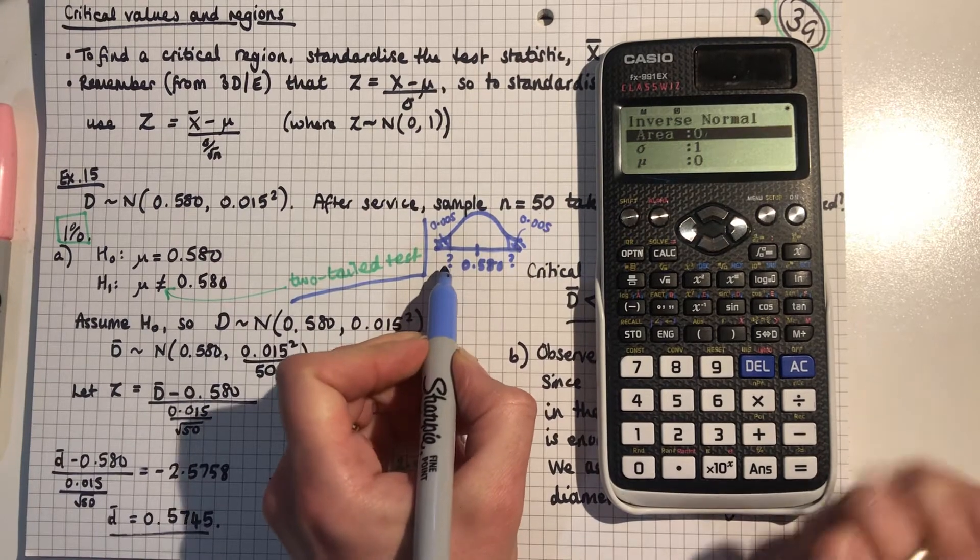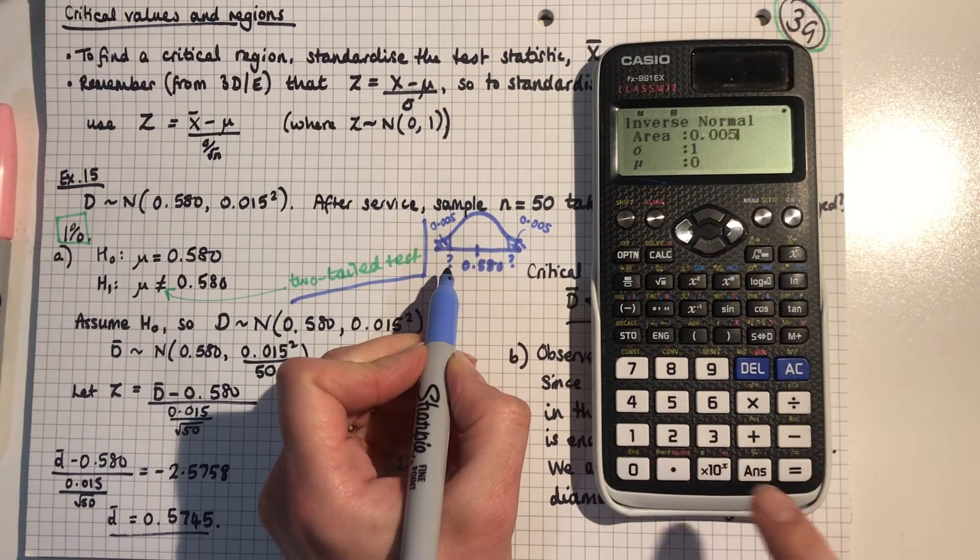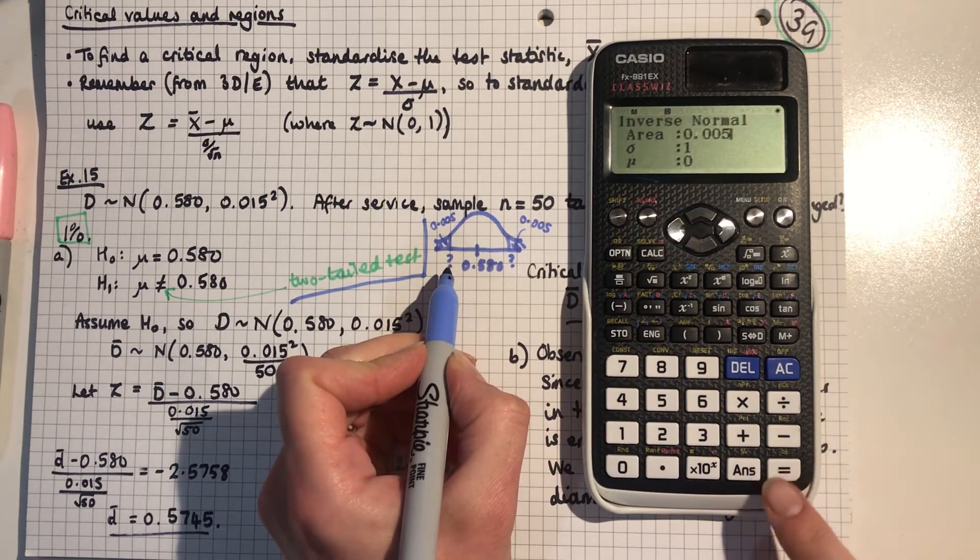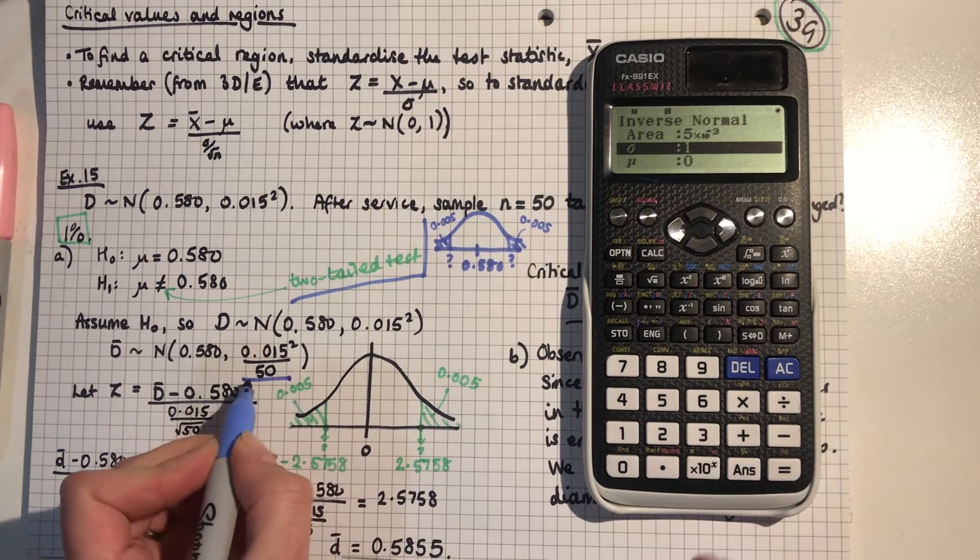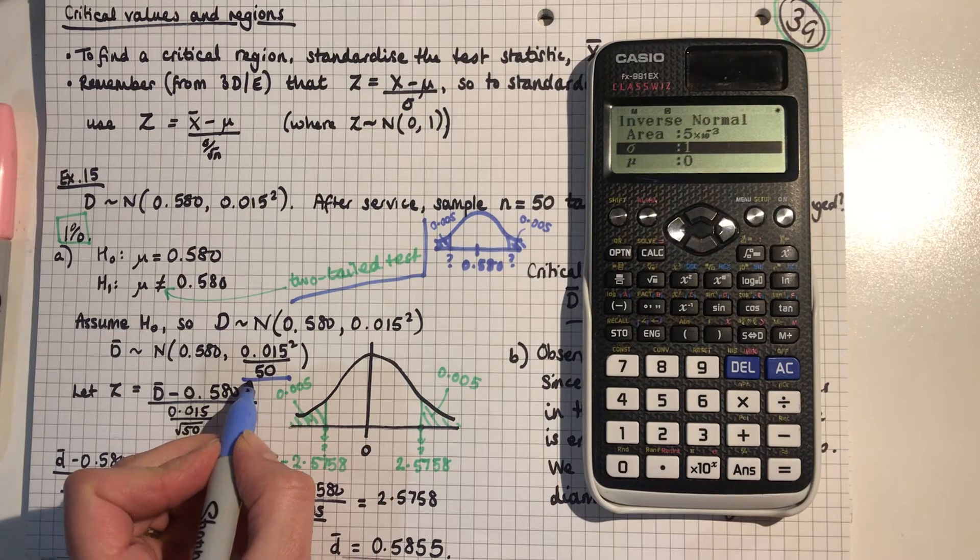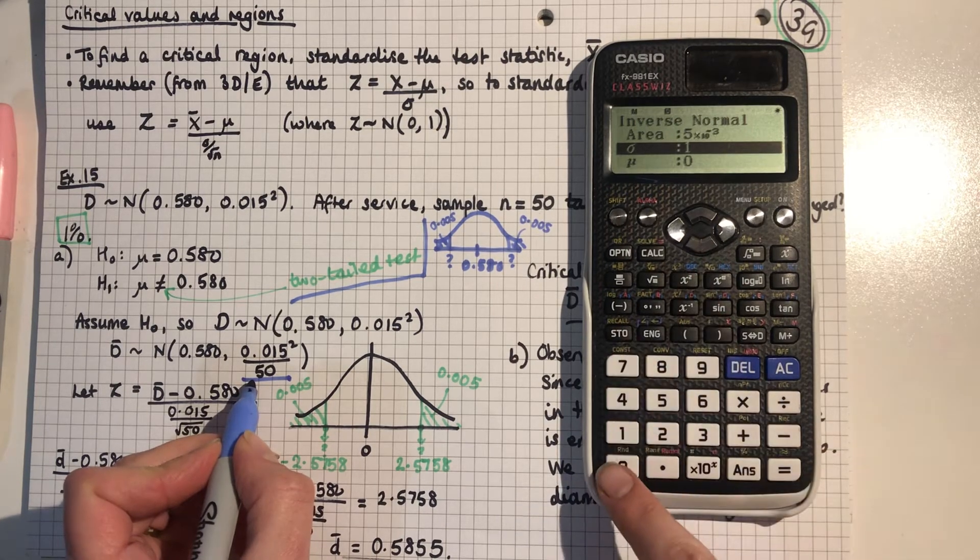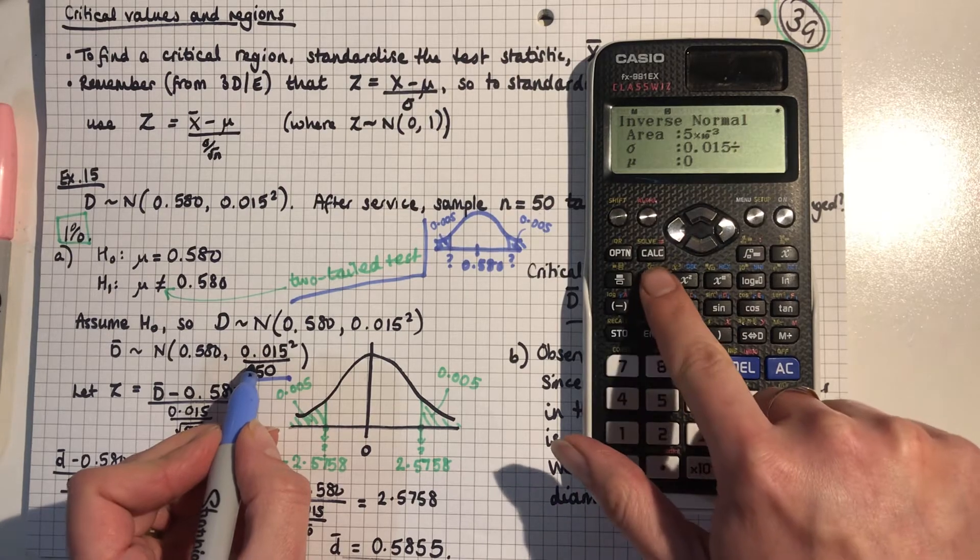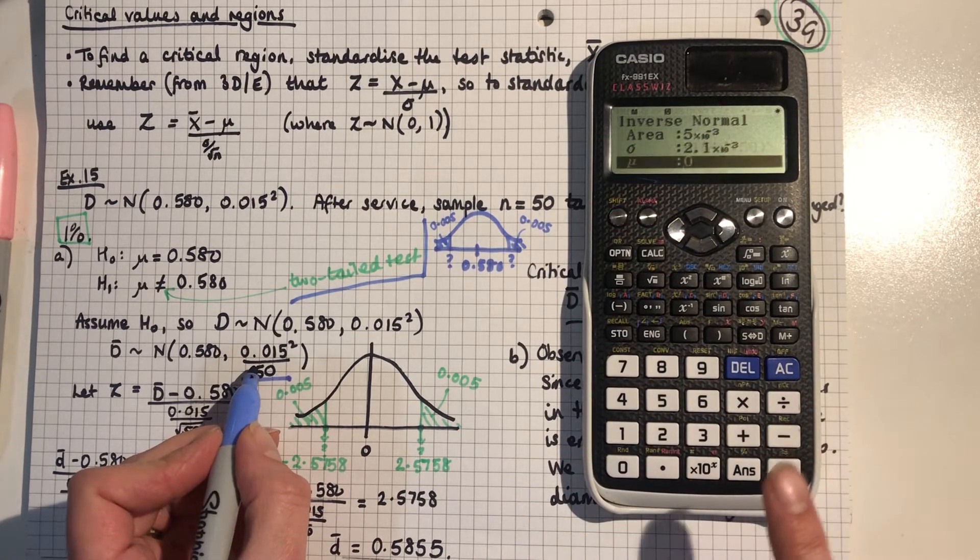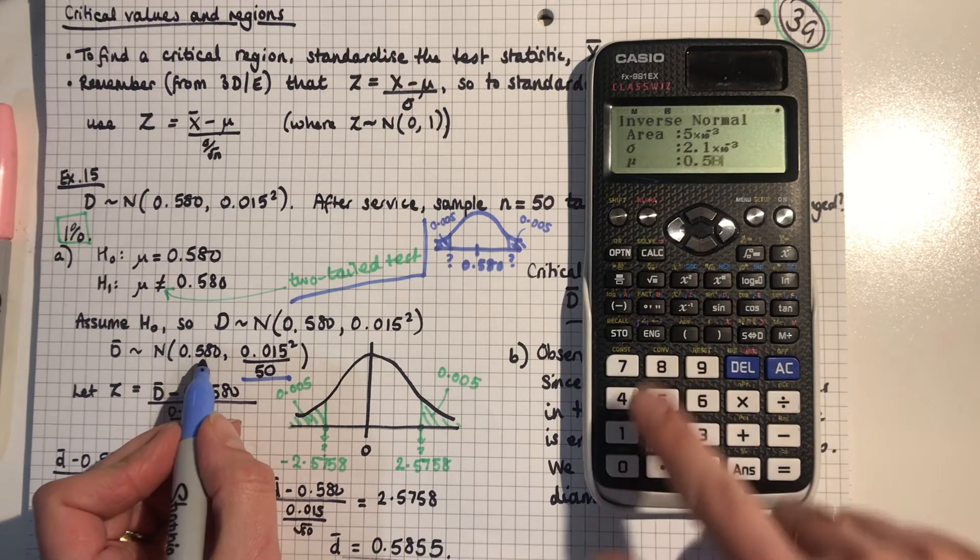So let's find this one first. So the area is 0.005 and the value of sigma is this, but square rooted. So we've got 0.015 divided by square root of 50 and the value of mu is 0.580.